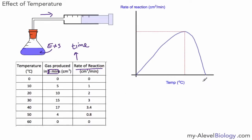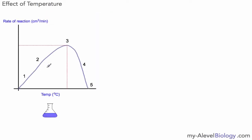Our graph of rate of reaction versus temperature ends up looking something like this. The graph peaks at around about 40 degrees at 3.4 centimetres cubed per minute. Usually we think that raising the temperature makes a reaction faster and faster, but for an enzyme-controlled reaction that doesn't happen — above a certain temperature the rate rapidly declines. We need to be able to understand and explain why that happens.